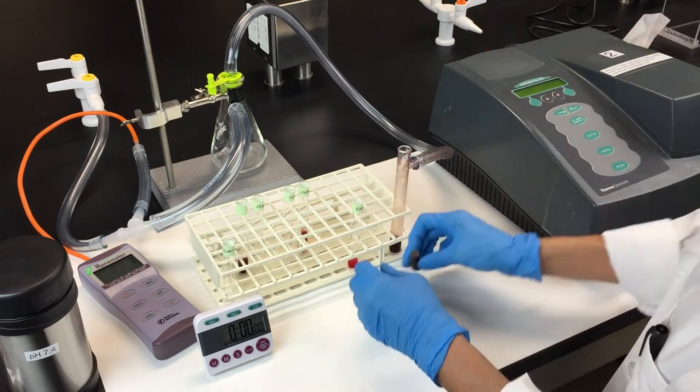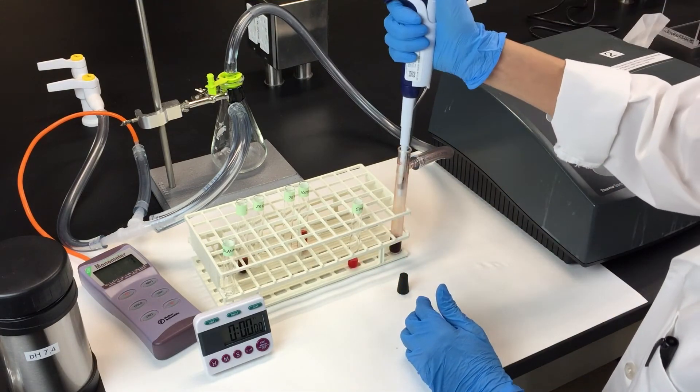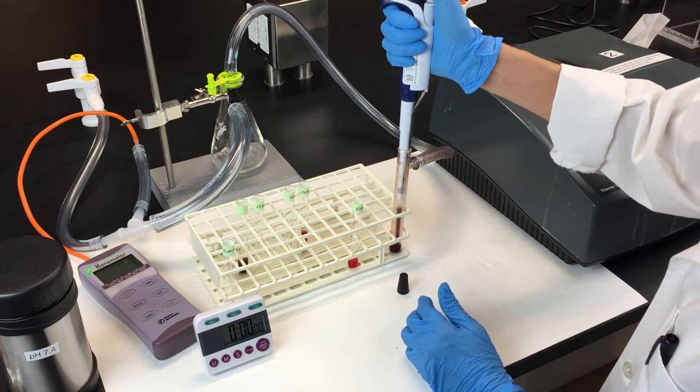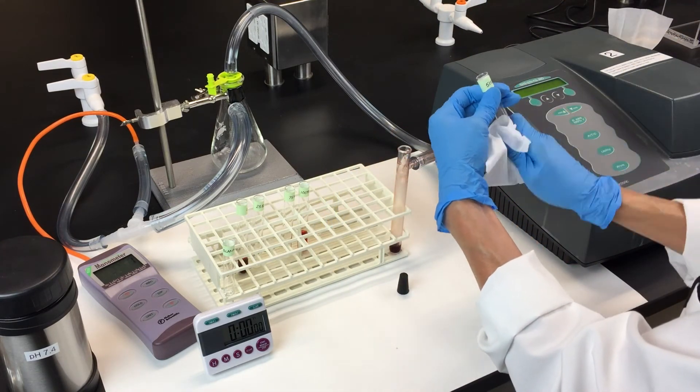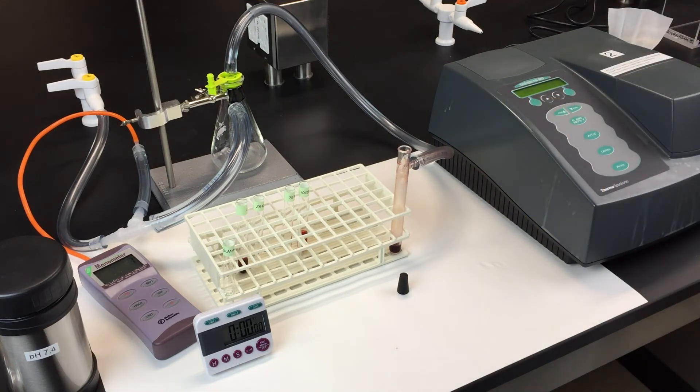Now add one milliliter of the fully deoxygenated hemolysate to the 50% oxygenation tube. Wipe off the tube, place it in the spectrophotometer, and take the reading.